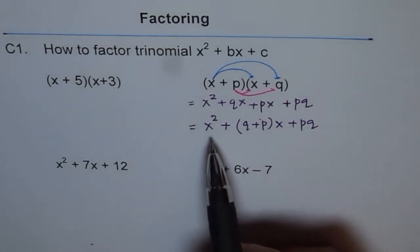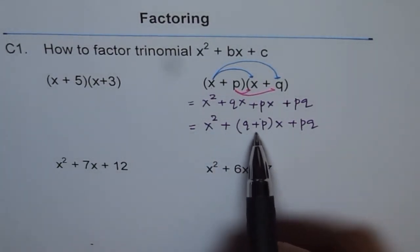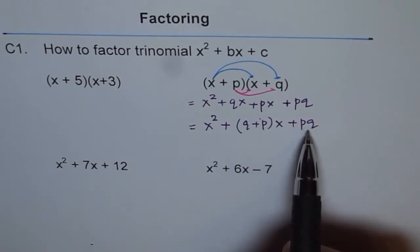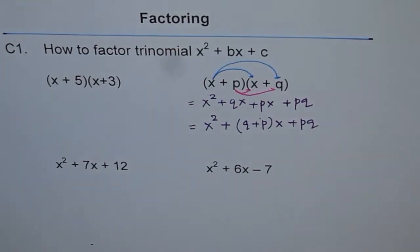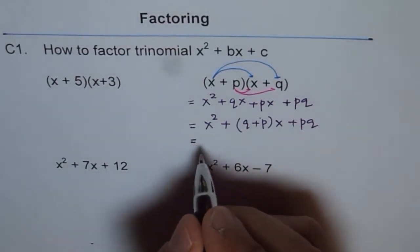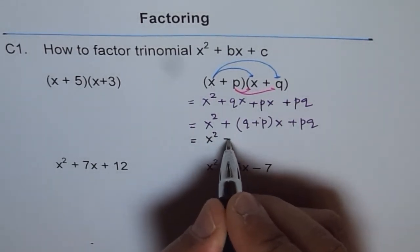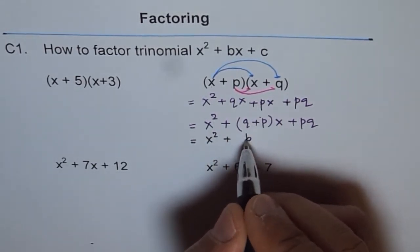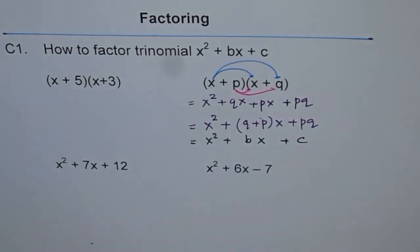Now, that x squared plus q plus p is also a constant. And pq is also a constant. So we can write this in this fashion, general equation. That is, we can write this as x squared plus bx plus c.